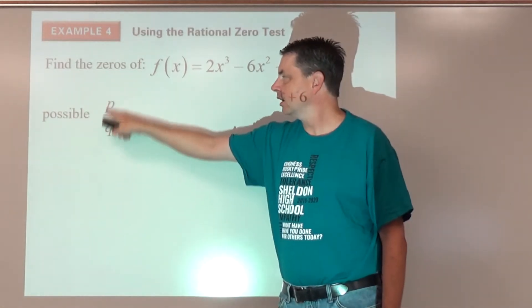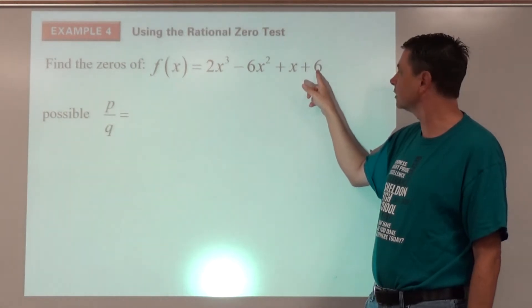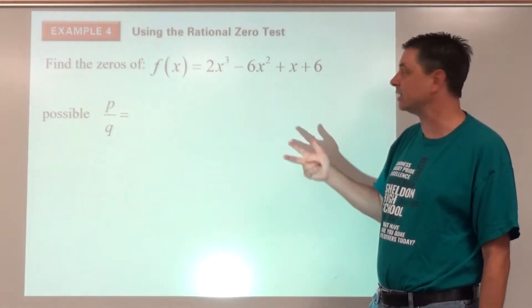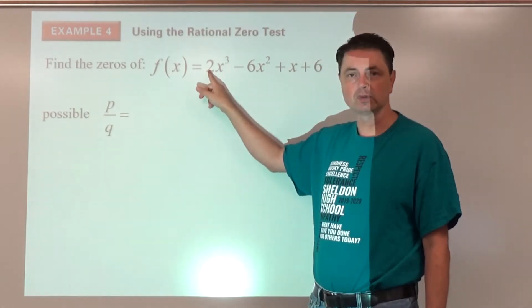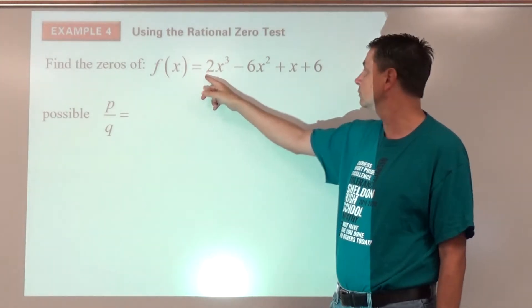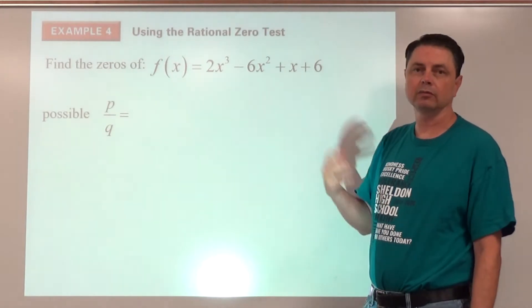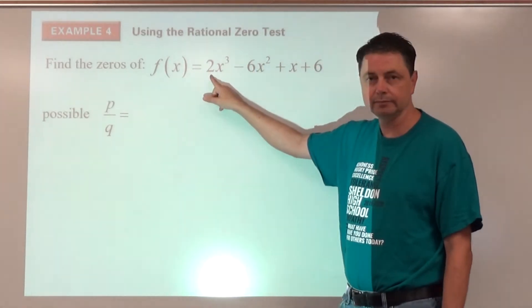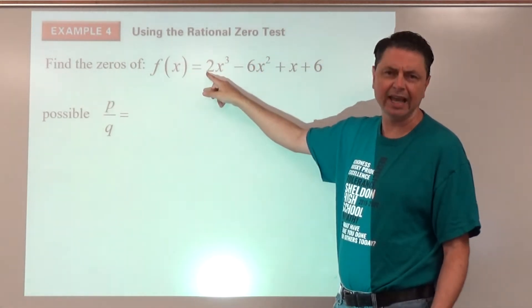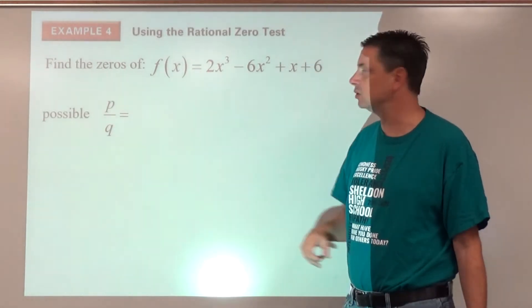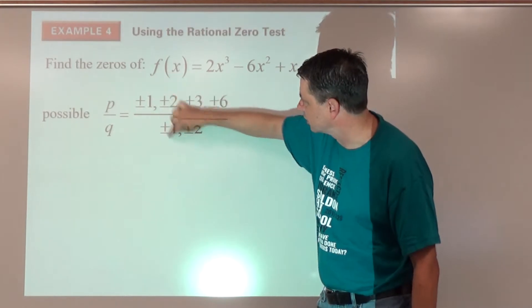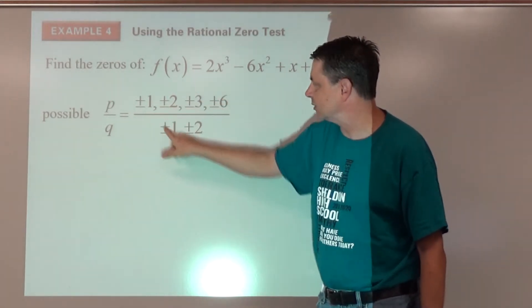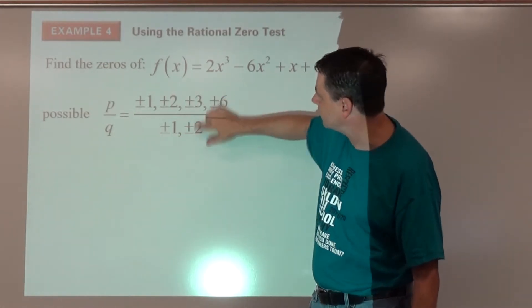Then we list them as possible quotients. The p list — factors of the constant — is plus or minus 1, 2, 3, and 6. We divide those by the factors of two: plus or minus 1 and plus or minus 2. Going through all combinations, we get plus or minus 1, 2, 3, 6 from dividing by one, then one half and three halves as the additional unique values. That's our full list of possible rational zeros.